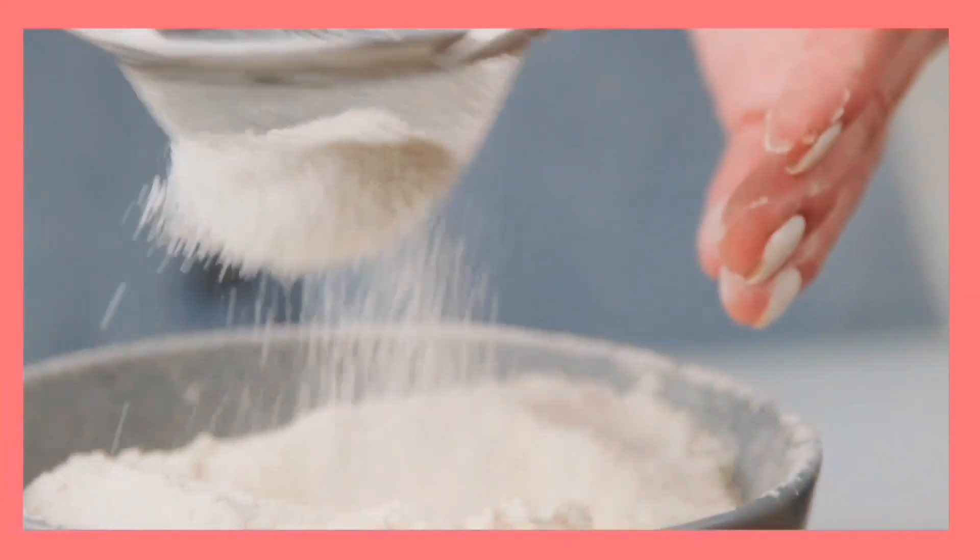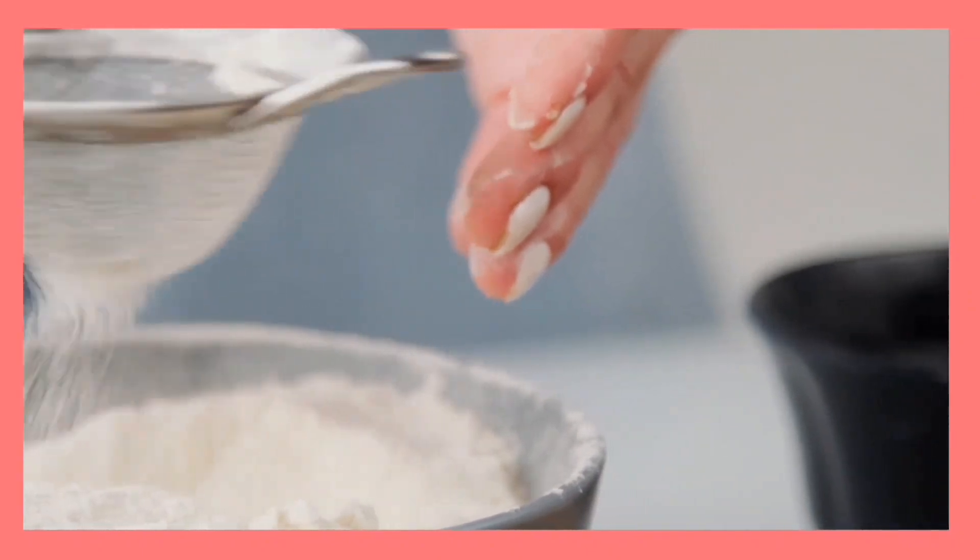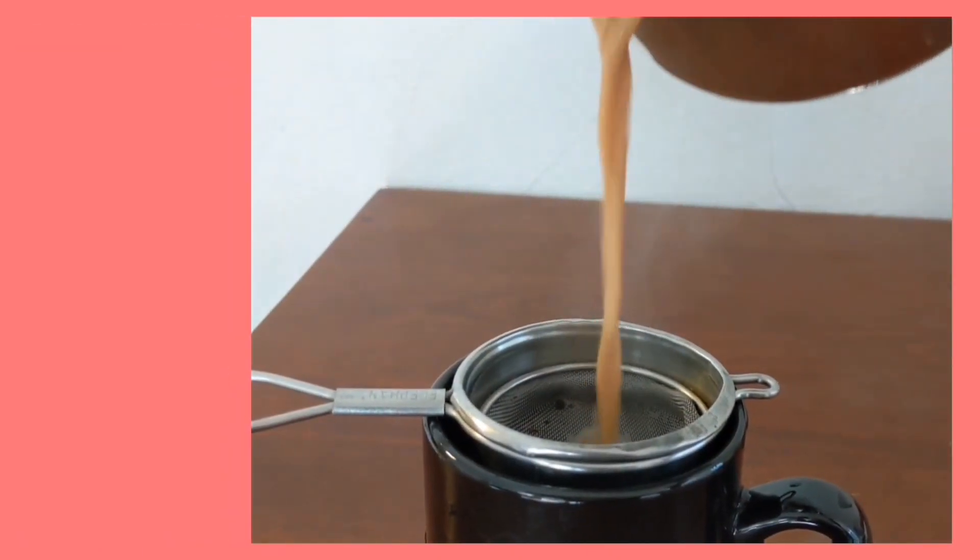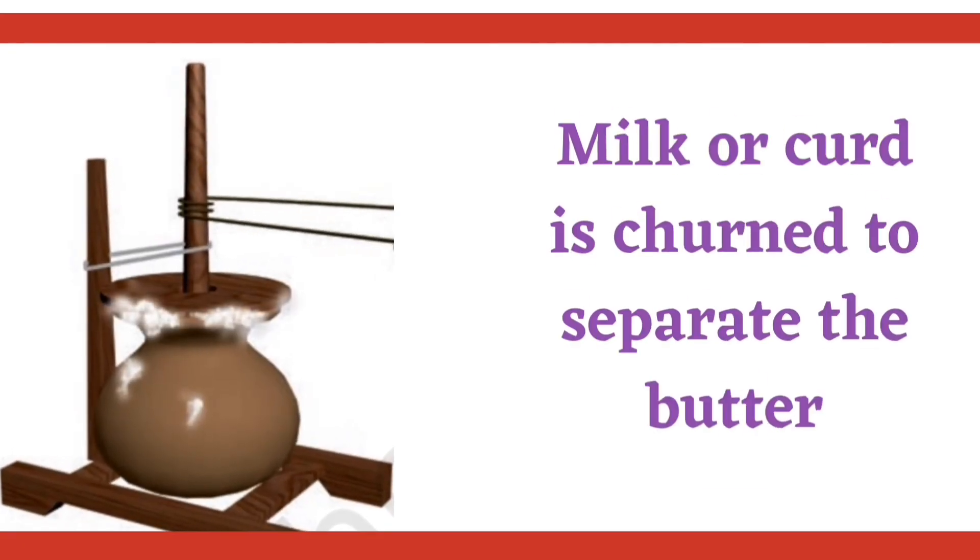In our daily life, you may have noticed a substance being separated from a mixture of other materials, like tea leaves separated from liquid with a strainer while preparing tea, and milk or curd churned to separate the butter.